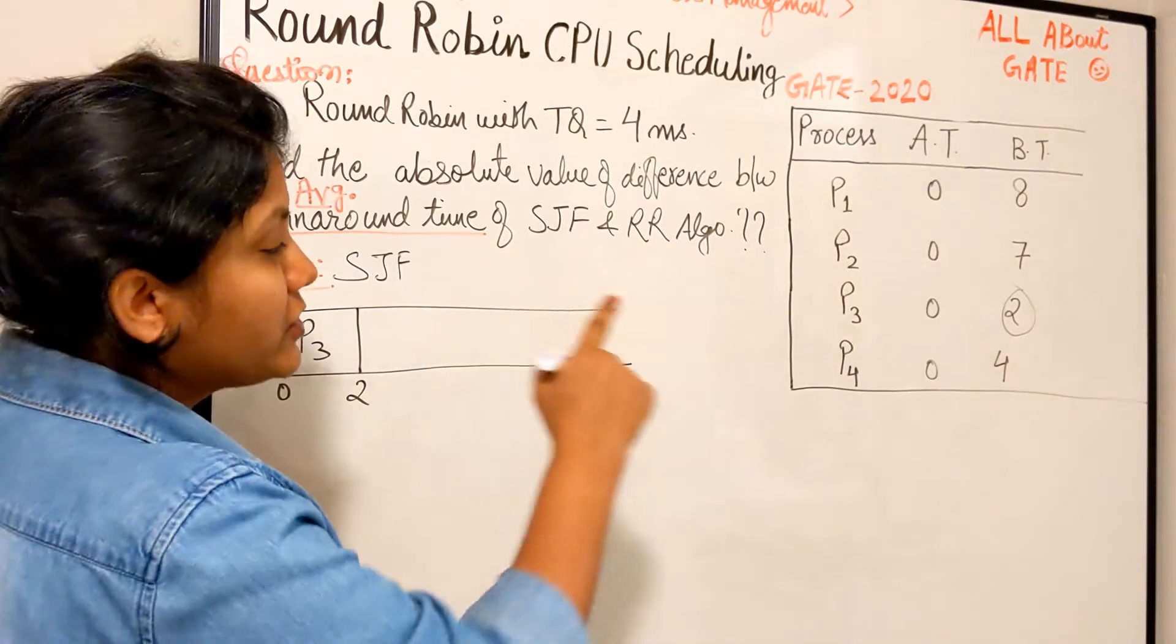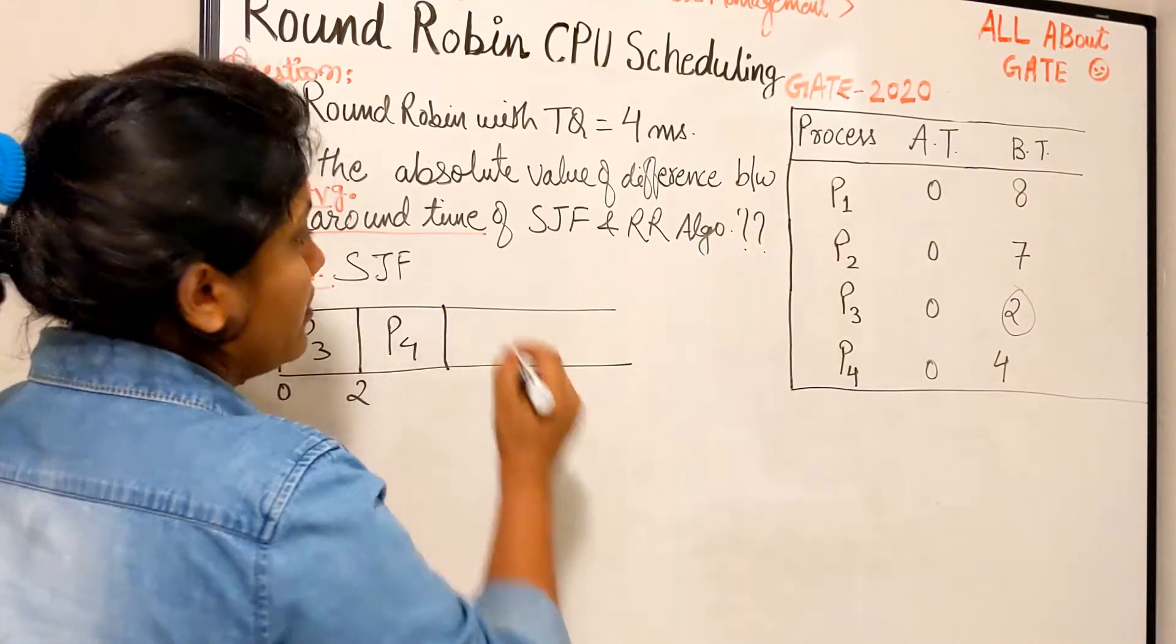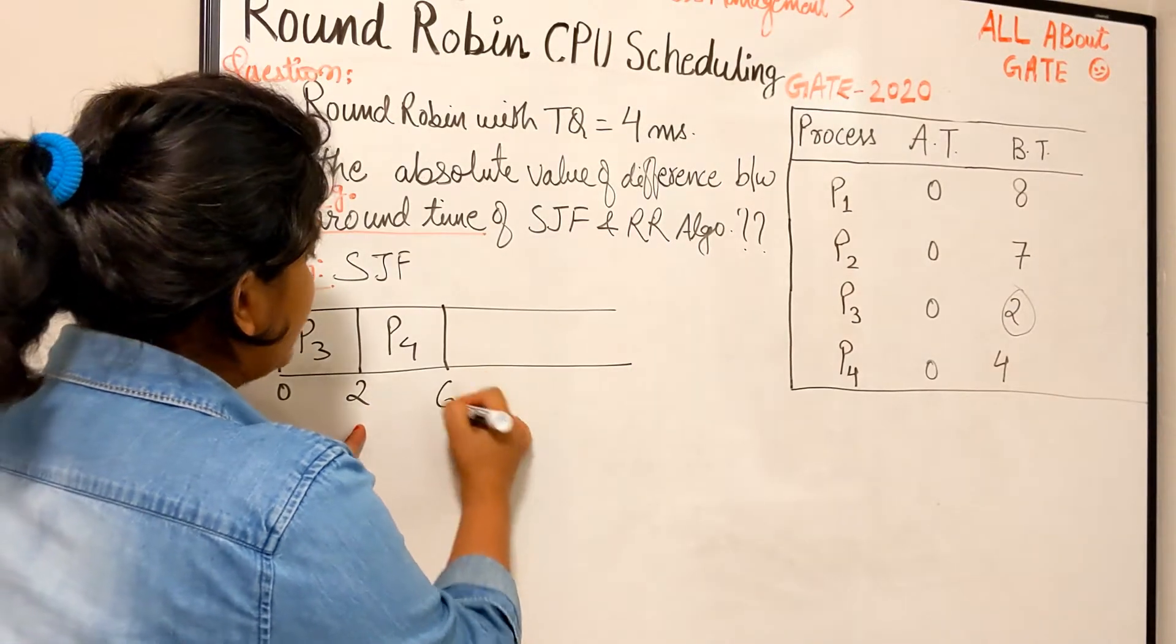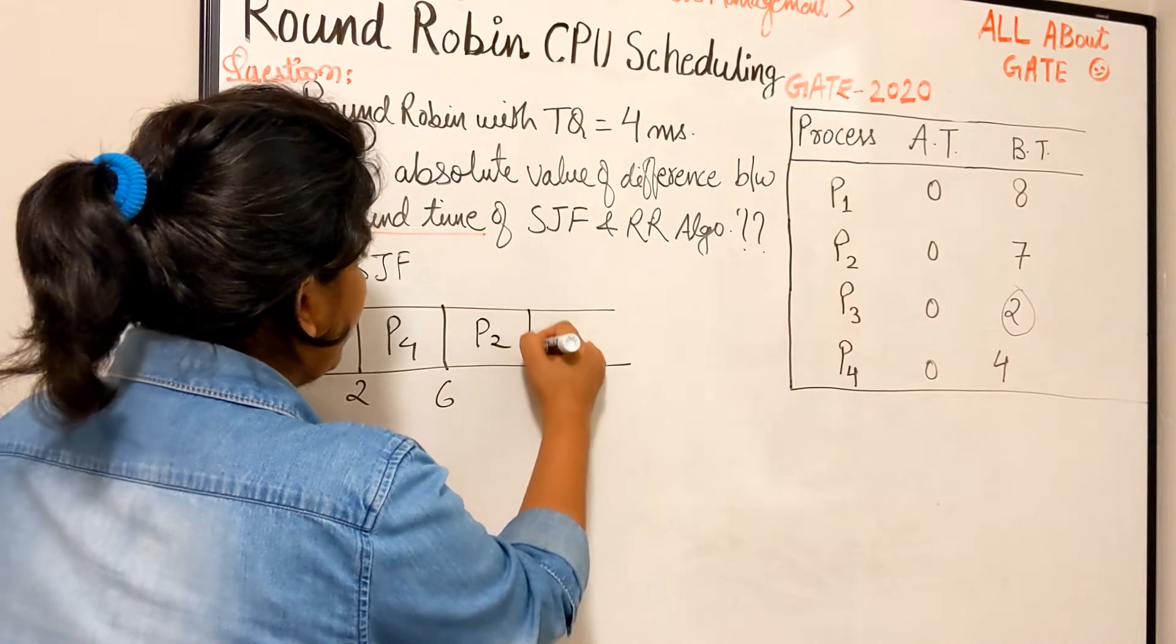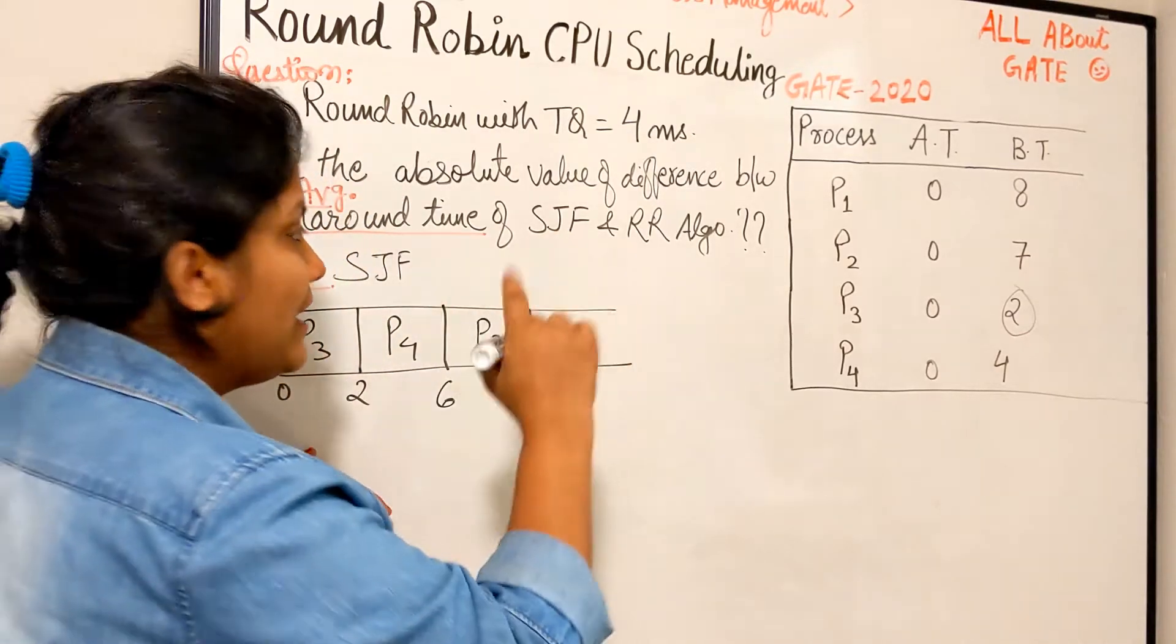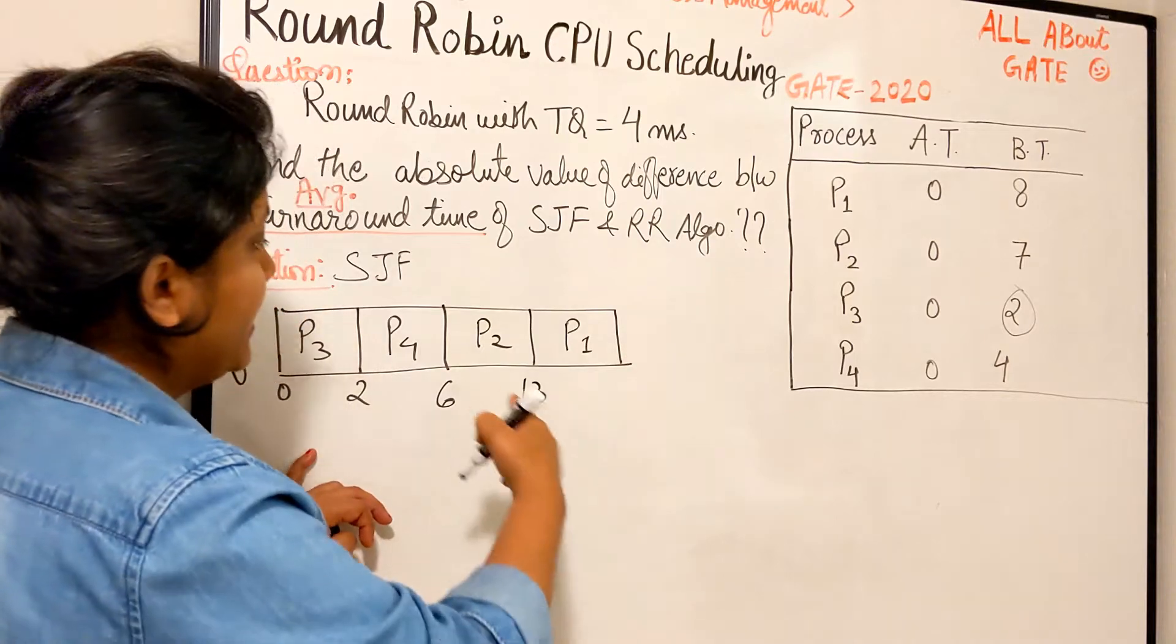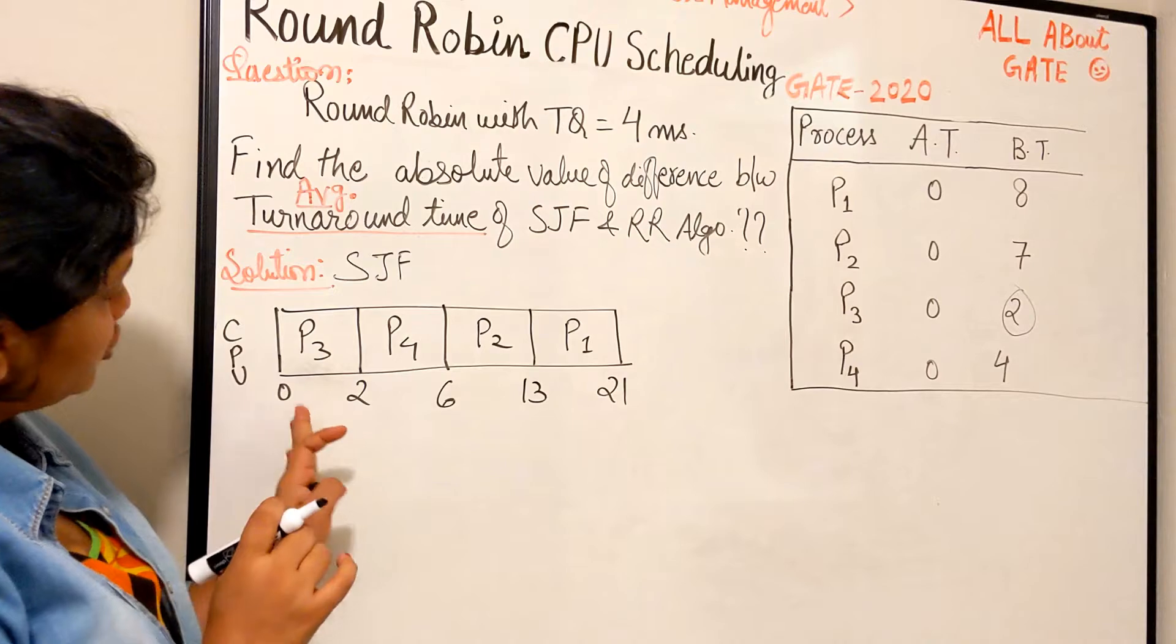Let's put P3 at time zero, finishes at 2. The next smallest process is P4, which finishes at 2 plus 4 equals 6. Next smallest is P2, which needs 7, so 6 plus 7 equals 13. Last process P1 needs 8, so 13 plus 8 equals 21. This is the Gantt chart for SJF.